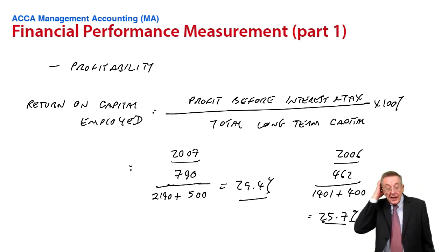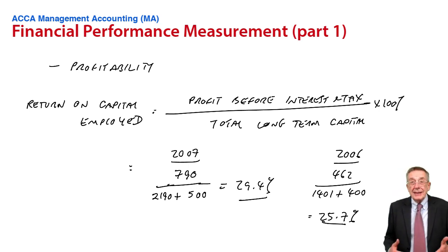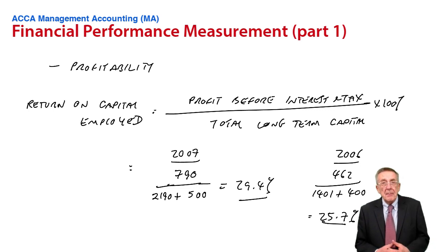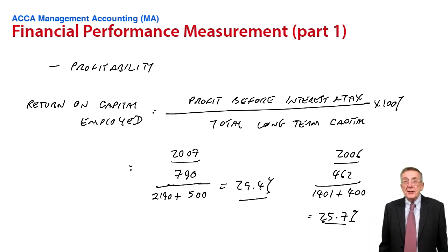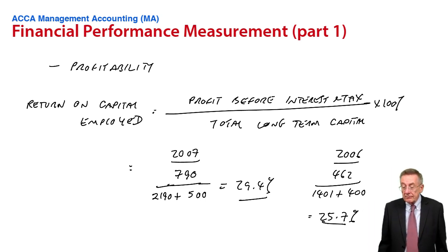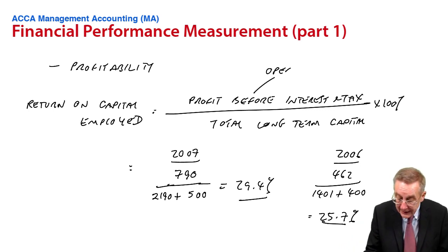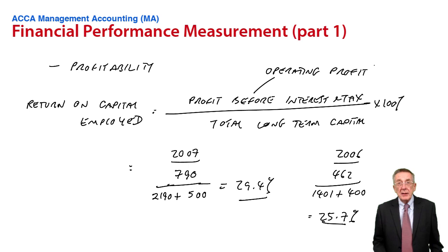Now, a couple of things there. First of all, the reason we look at the profit before interest and tax is certainly before tax, because that's not measuring how well the company is being managed. If the government changes the tax rates, we pay more or pay less. But that's not the fault of how we're managing the company. And also, we want to find the total profit that's being earned from the total long-term monies. So it's before interest. That's also called profit from operations, or the operating profit. That's the profit that's measuring how well management are doing.